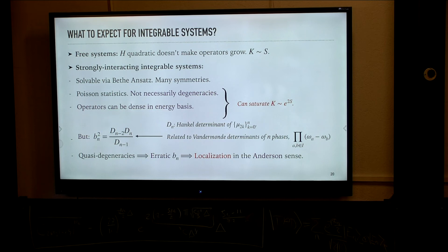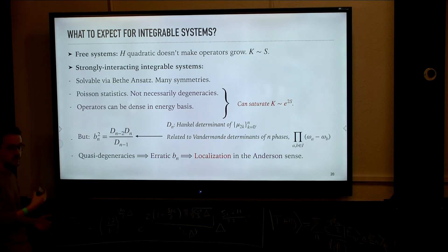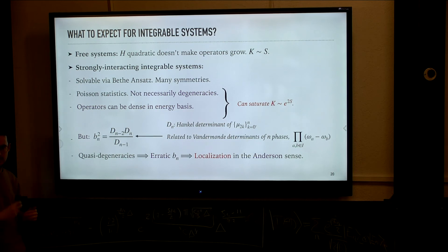The more intriguing question is what happens in strongly interacting integrable systems. These are typically defined by the Bethe ansatz, meaning systems that can be solved by Bethe ansatz techniques, which implies they have many — extensively many — conserved charges appearing in the series expansion of the transfer matrix. This implies a high level of uncorrelation between the eigenvalues of the Hamiltonian, and therefore the level spacing statistics become Poissonian, making it very likely to find eigenvalues arbitrarily close to each other. However, this doesn't necessarily imply exact degeneracy — and in fact, generically there are no exact degeneracies. Furthermore, operators can still be dense in the energy basis, meaning all their elements in the energy basis can be non-zero, even if they don't satisfy ETH.